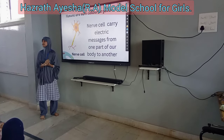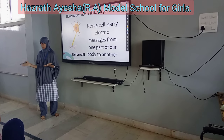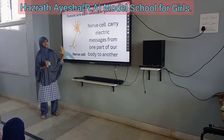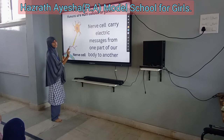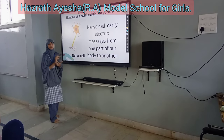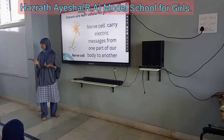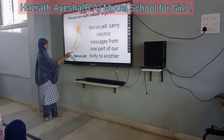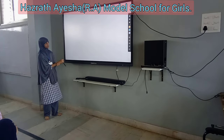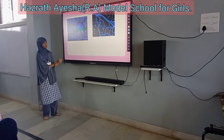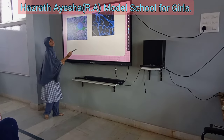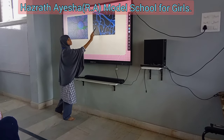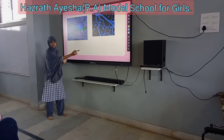We know that humans are multicellular. This is a nerve cell — it carries electric messages from one part of the body to another. This is what a nerve cell looks like.